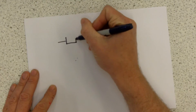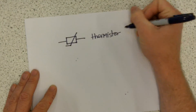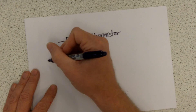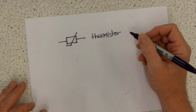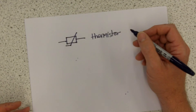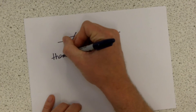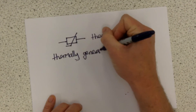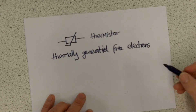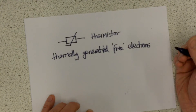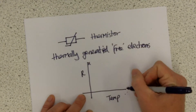A thermistor is another type of changeable resistor. This time it depends on the temperature — hence the name: 'therm' for thermal, thermal resistor or thermistor. It works in exactly the same way: if it's in a warm temperature, the energy from the heat enables electrons to escape from their atoms — thermally generated free electrons. The warmer it is, the more energy there is, the more electrons can escape from their atoms, and therefore the more conducting electrons you've got. So when it's cold, the resistance is high, and when it's hot, the resistance is low.